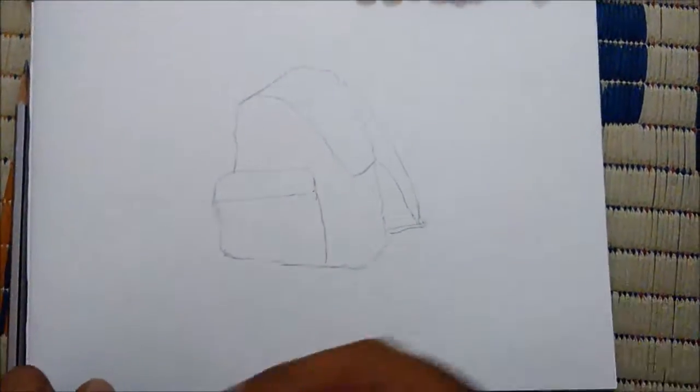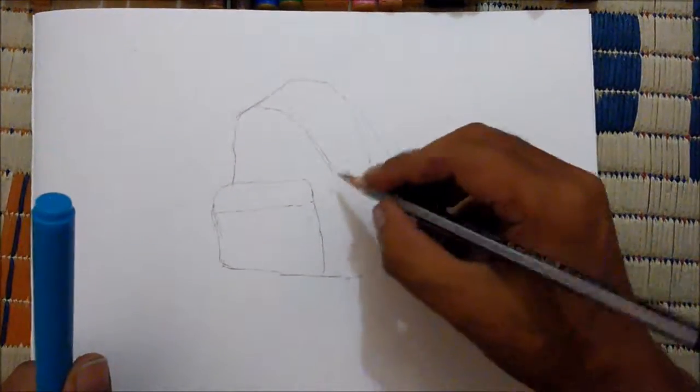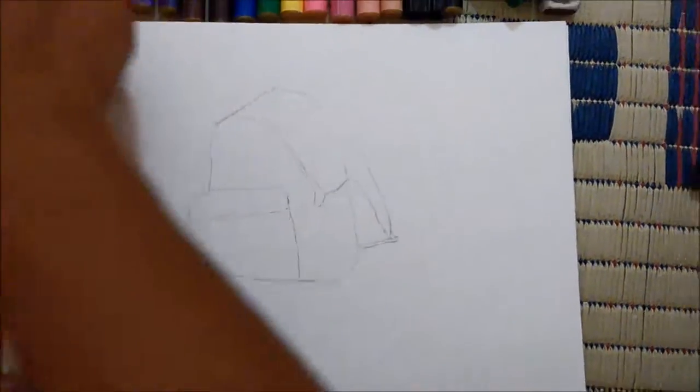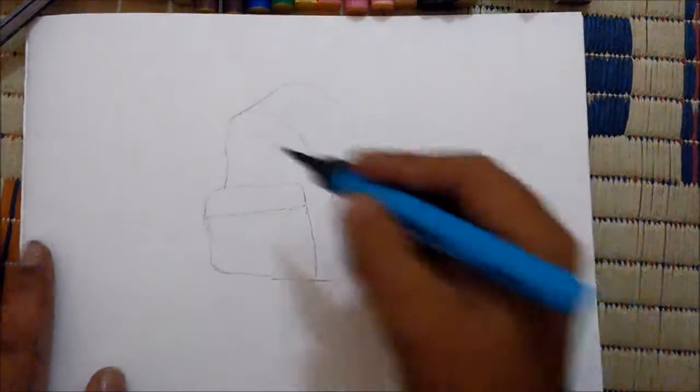First, but before that, just leave this gap here so that here zip will come. Okay, so leave this gap. Now start to paint, fill this entire border lines with blue color.